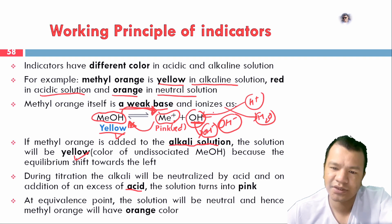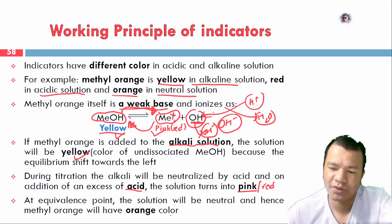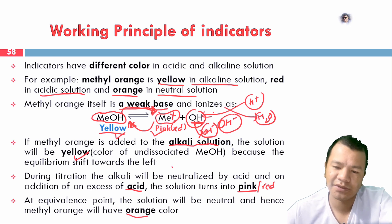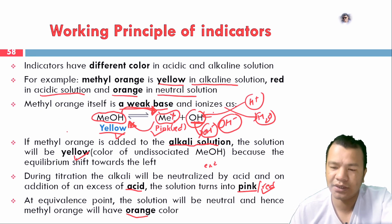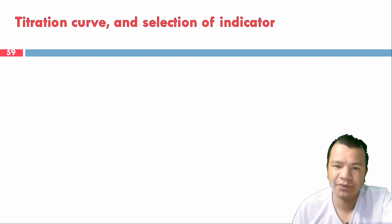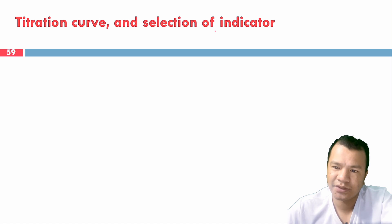The equilibrium shifts to the right, and the color becomes pink or red. At the equivalence point, the acid equals the base. The orange color indicates the endpoint. The color changes depending on the medium in acid-base titration.